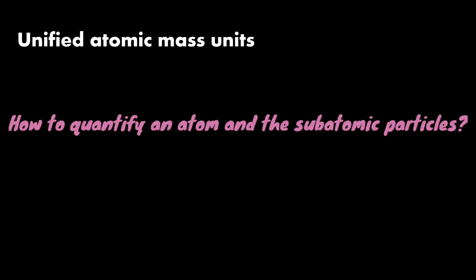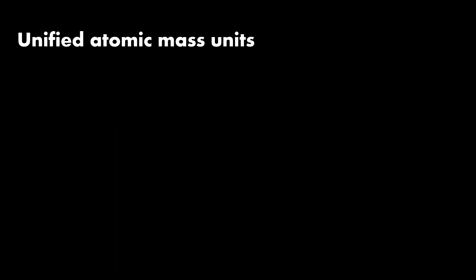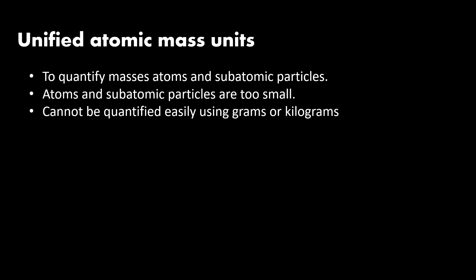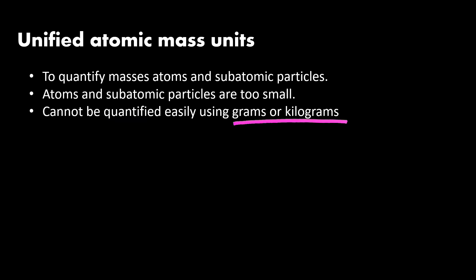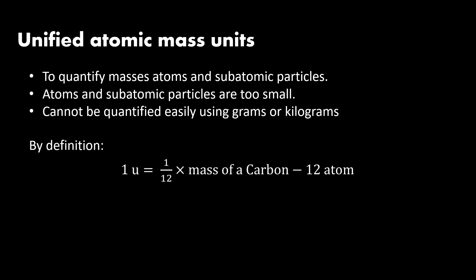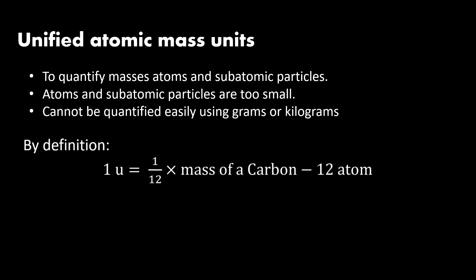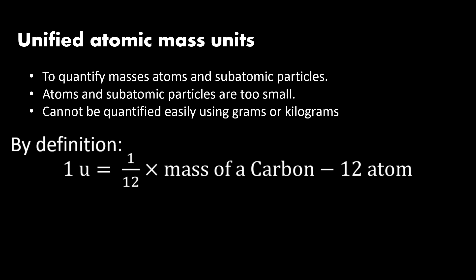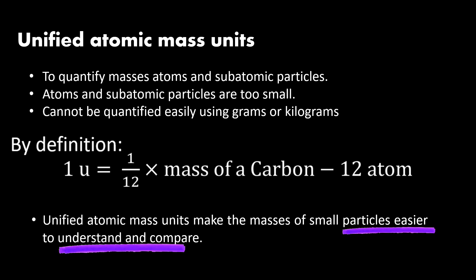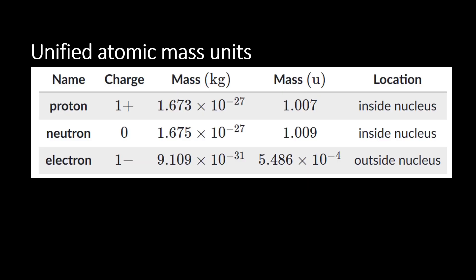How do we quantify atoms and subatomic particles? To quantify atoms and subatomic particles, a term — Unified Atomic Mass Unit — is introduced. Unified Atomic Mass Unit is used to quantify masses of atoms and subatomic particles. It is introduced because atoms and subatomic particles are simply too small and cannot be quantified easily using grams or kilograms. By definition, 1 unified atomic mass unit is equal to 1/12 the mass of a carbon-12 atom. This table gives the mass of each subatomic particle in kilograms and also in unified atomic mass unit, or U.